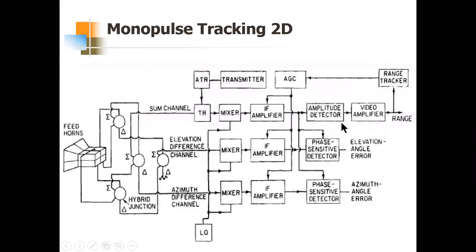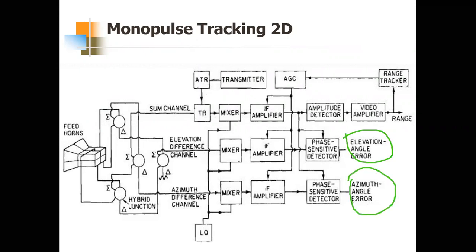This is the block diagram — the same block diagram is in your textbook as well. You can see there are two angle errors found here: one is elevation and one is azimuth, and there is a sum channel. The sum channel and difference channel were seen in one-angle-coordinate monopulse tracking as well. Here one AGC block is shown which was not there in the previous one-angle-coordinate monopulse. This AGC — automatic gain control — makes sure there is stability and balance in the whole radar system.